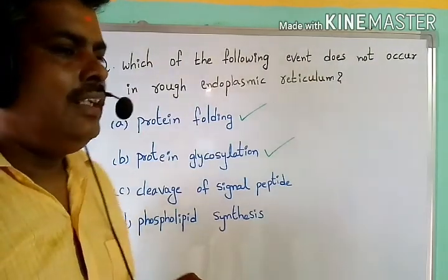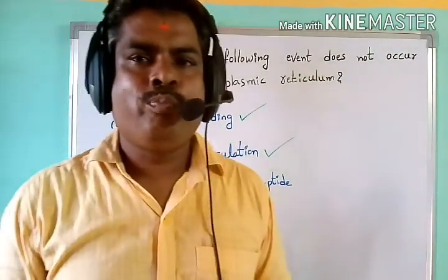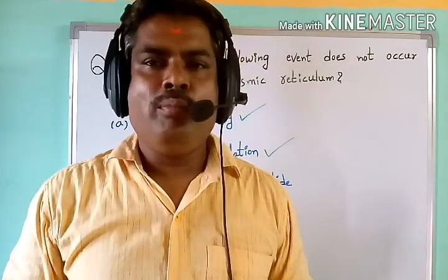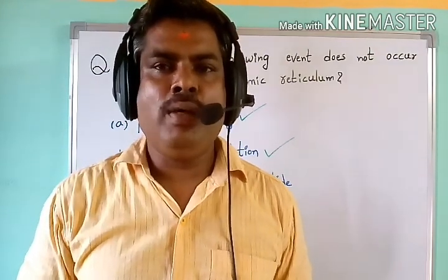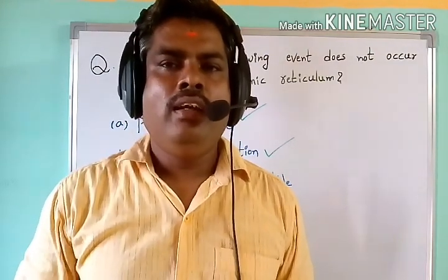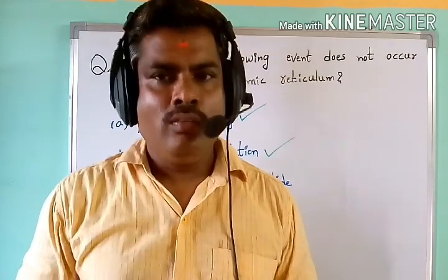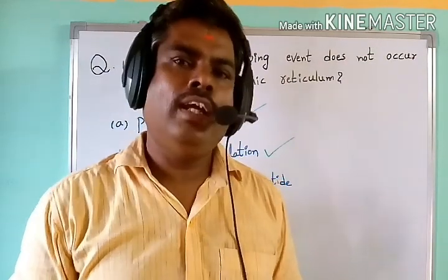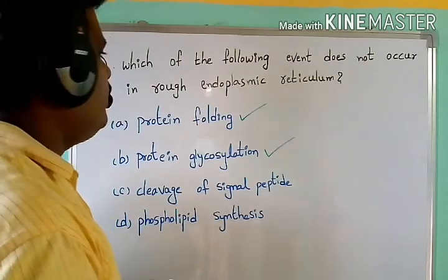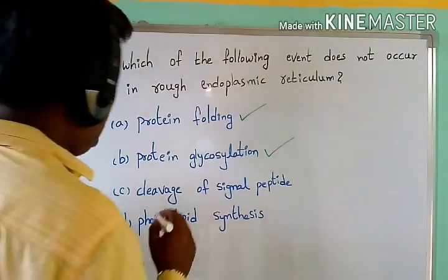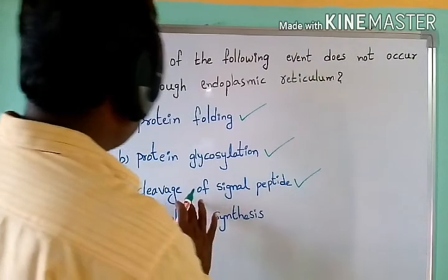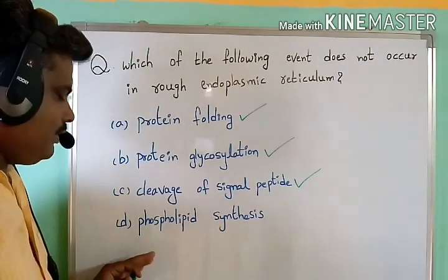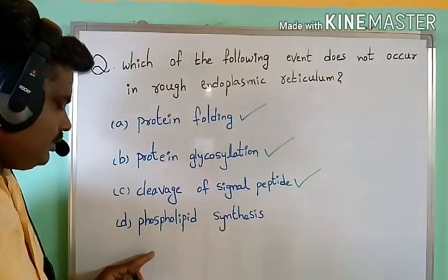Option C: cleavage of signal peptides. After formation of a complete protein, the signal peptides must be cleaved from the formed protein. This process also takes place inside the rough endoplasmic reticulum. So cleavage of signal peptides is also a correct activity of the RER.